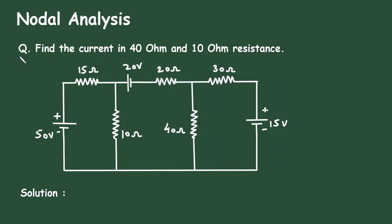Nodal Analysis Question: Find the current in 40 Ohm and 10 Ohm resistance. Here in this circuit, we have to find the current through this 40 Ohm resistance and this 10 Ohm resistance by using nodal analysis.